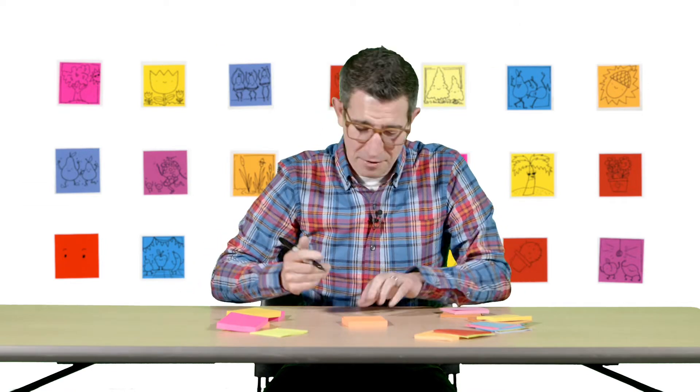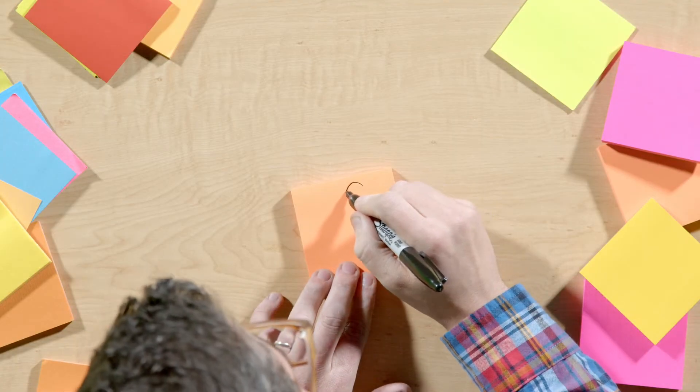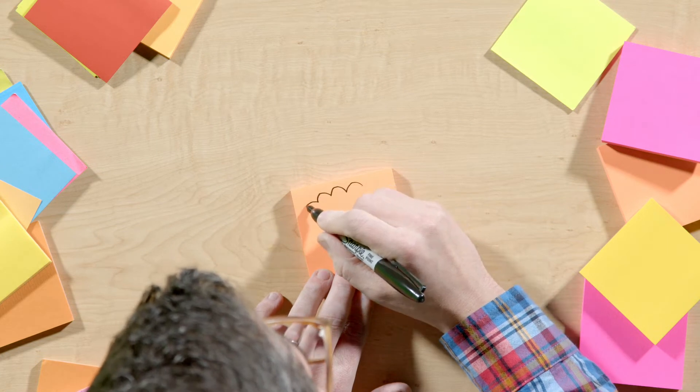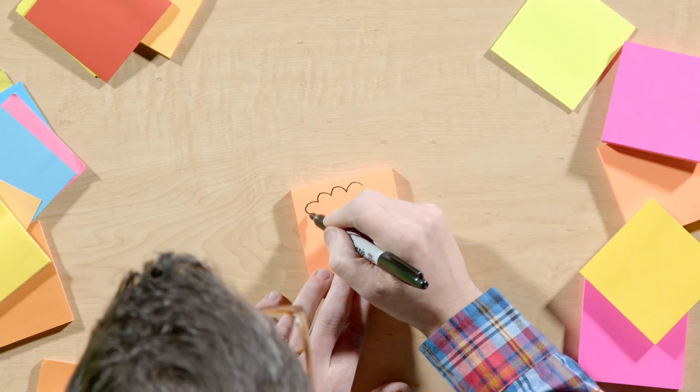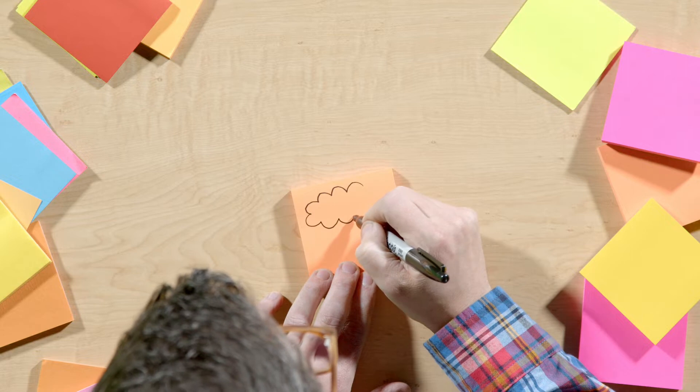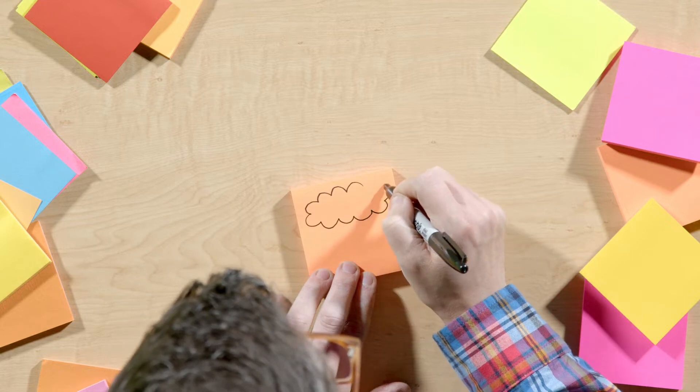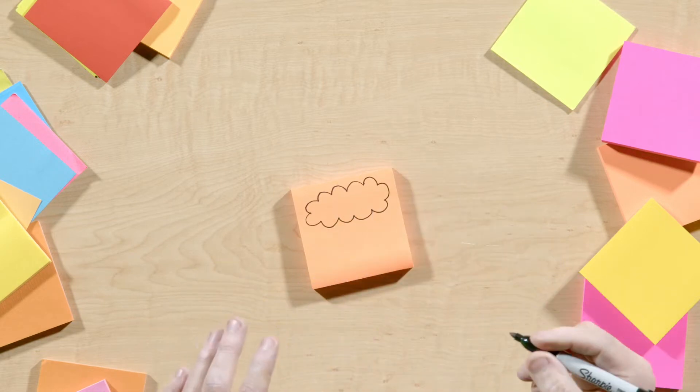I'm going to start with some bumps to make my cloud, because that's where the rain comes from. Bump, bump, bump. Alright, so there we've got a nice full cloud.